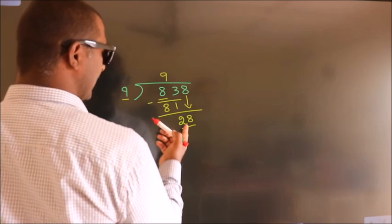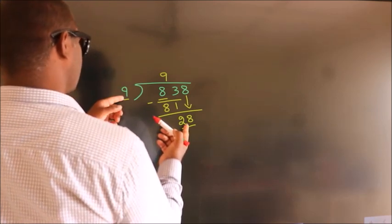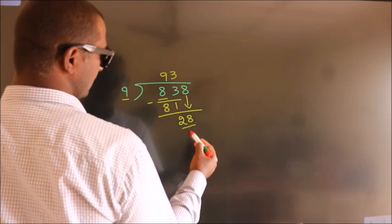A number close to 28 in the 9 table is 9 times 3 equals 27.